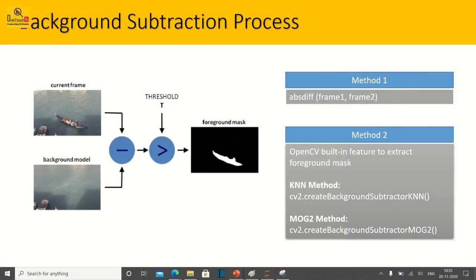Here is how the background subtraction process is carried out. You will have two sets of frames: frame one will be the background model and frame two will be the current frame. When you subtract the current frame from the background model and apply a threshold — making backgrounds black and the foreground white — you get the foreground mask.